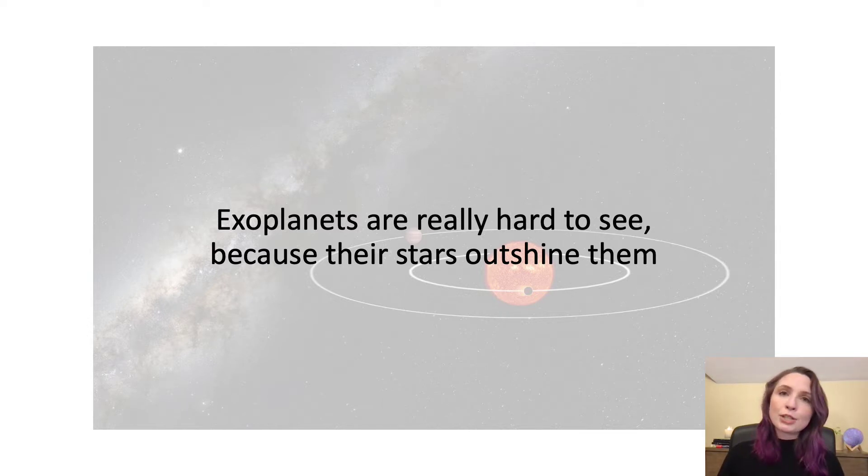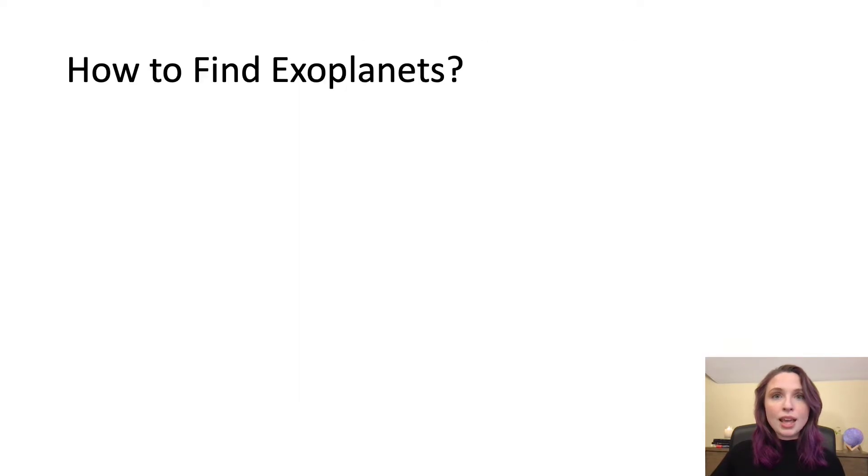Now back before exoplanets were discovered, astronomers did not have the technology necessary to image an exoplanet directly. Instead, they had to use what they knew about stars and about planets to think of another way to detect exoplanets. And they thought of one way using gravity.